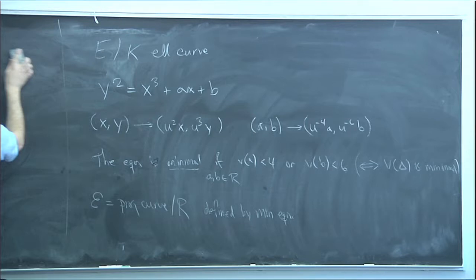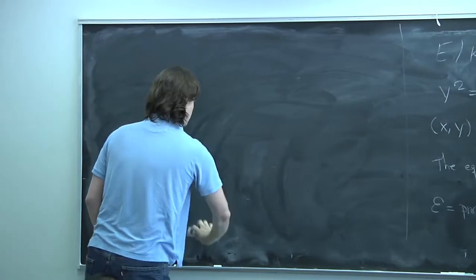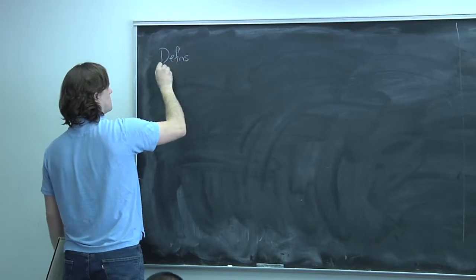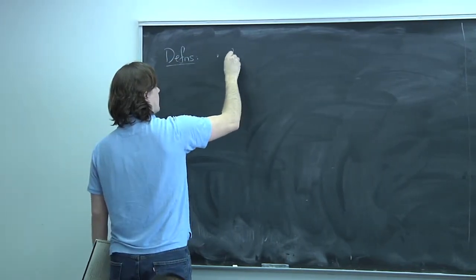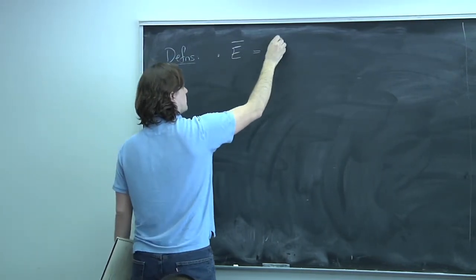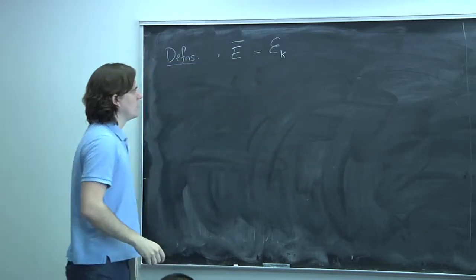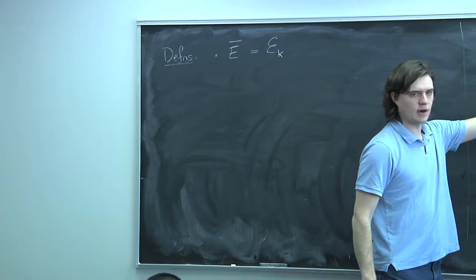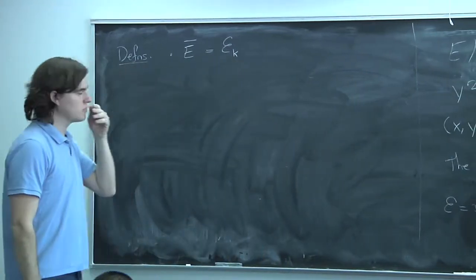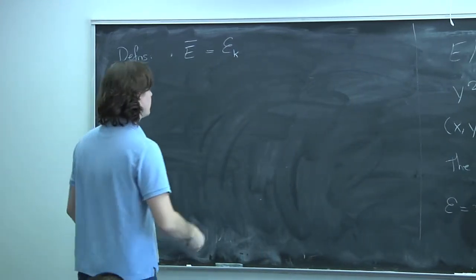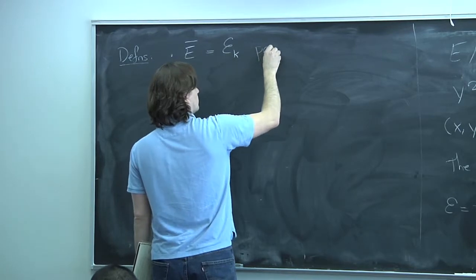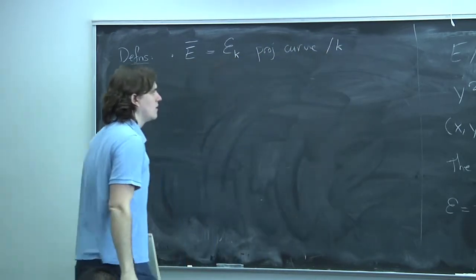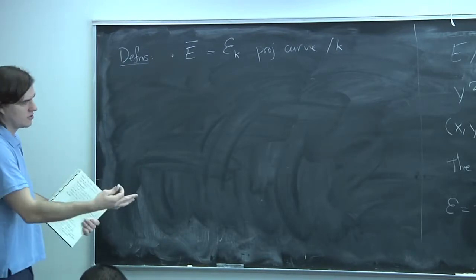We're going to make a few definitions. I'm going to let Ē be the special fiber of this script-E — that just means you're reducing this equation modulo the maximal ideal. So this is a projective curve over little k.